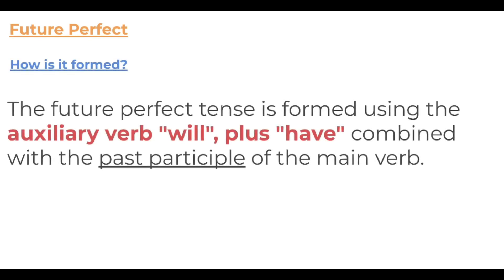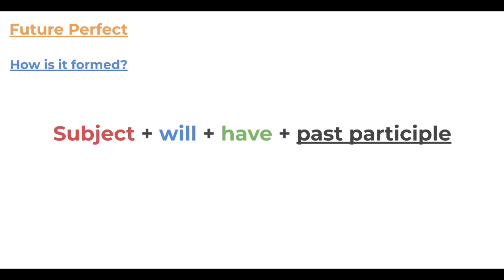How do we form this tense? We use the auxiliary verb 'will' after the subject, so: subject, then 'will', then another auxiliary verb 'have', combined with the past participle of the main verb. The equation is: subject + will + have + past participle. The 'will' reflects the future element; the 'have' and the past participle reflect this perfect timeline — something happening before something else.